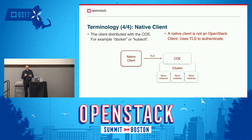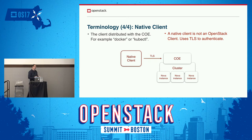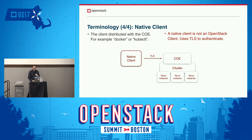The fourth piece of terminology is native client — native to the COE, not native to OpenStack. To interact with the container clusters that Magnum creates, you use the native tool that goes along with that orchestration engine. For a Docker Swarm cluster, the native client is Docker. For a Kubernetes cluster, the native client is kubectl. When your native client interacts with your cluster, it presents TLS credentials rather than an OpenStack identity credential.